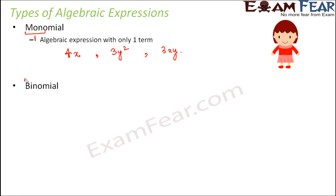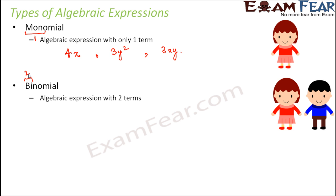Next is binomial. The term bi means 2. So an expression with two terms are called binomials. So example would be x plus y. So here you have two terms, x and y. So x and y are the two terms for this expression. So this is a binomial expression.